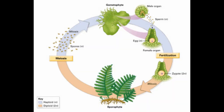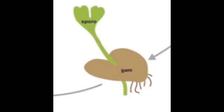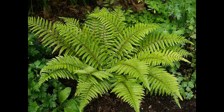The fern sperm then swims to the canal of the archegonia to fertilize the egg. The zygote from an egg and sperm grows by mitosis to then produce the sporophyte, creating the green plants you see here.